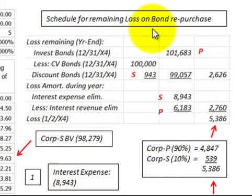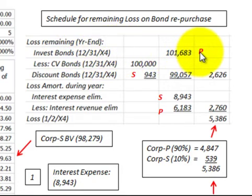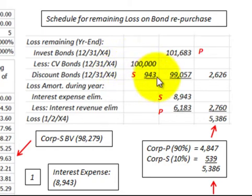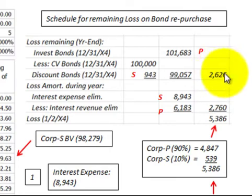Now we calculate the remaining loss on this bond repurchase. For the loss remaining at year end, the investment in bonds on 12/31/X4 is $101,683 — taken from the parent's schedule — less the carrying value of the bonds at $100,000, and a discount on the bonds at end of the fourth year of $943 from the subsidiary's schedule. That nets to $99,057, which against the investment in the bond gives a net amount of $2,626 as the loss remaining at year end.